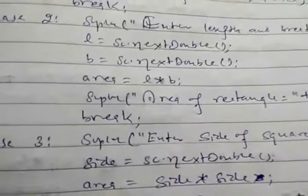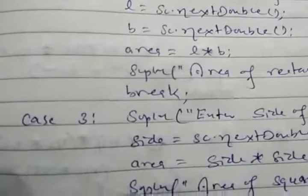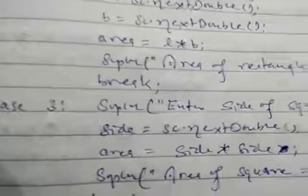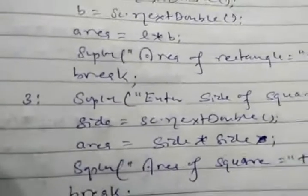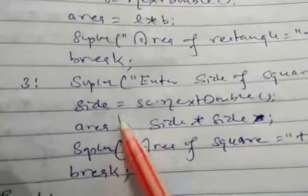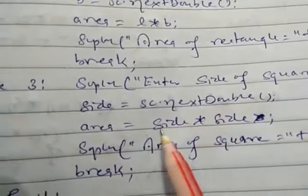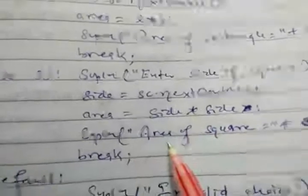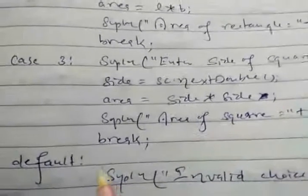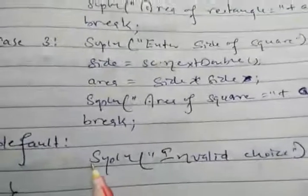So after every case we require a break statement. In case 3, we calculate the area of square: enter the side, side = sc.nextDouble(), area = side * side. We print area of square equal to area. Finally, there is a default case for invalid choice.